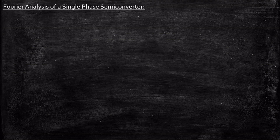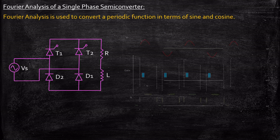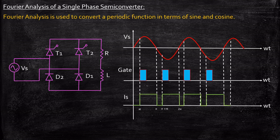Hello everyone. In today's video we will be taking a look at Fourier analysis of a single-phase semi-converter. Fourier analysis is used to convert a periodic function in terms of sine and cosine. We had previously analyzed the operation of a semi-converter with an R-load. We did not go into the detailed aspect of the source current, but if you look at the operation of the circuit, the source current waveform will look something like this. The interval from pi to pi plus alpha going to zero is because of the freewheeling action.